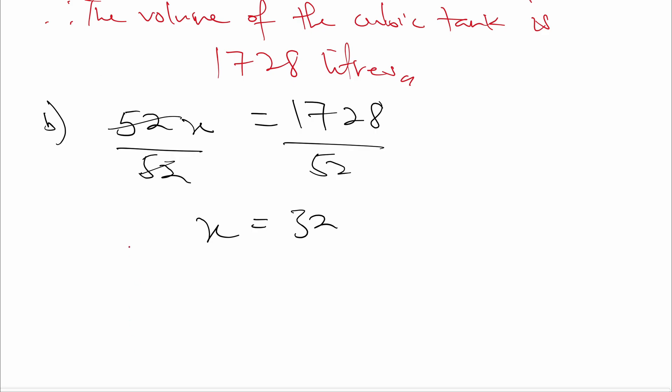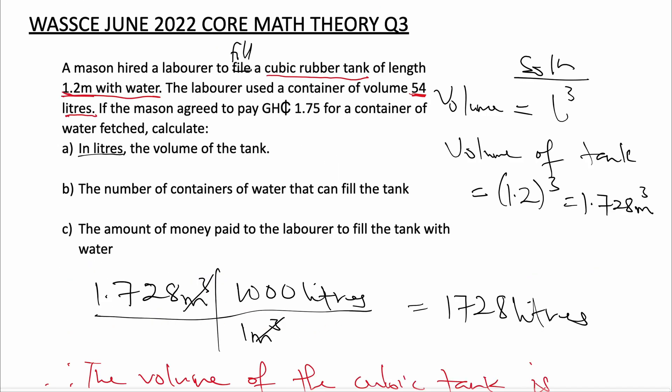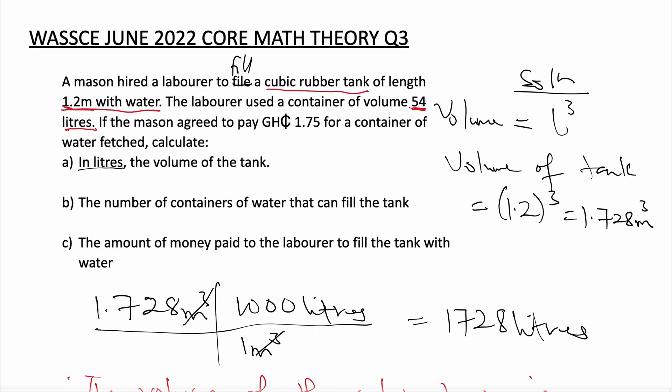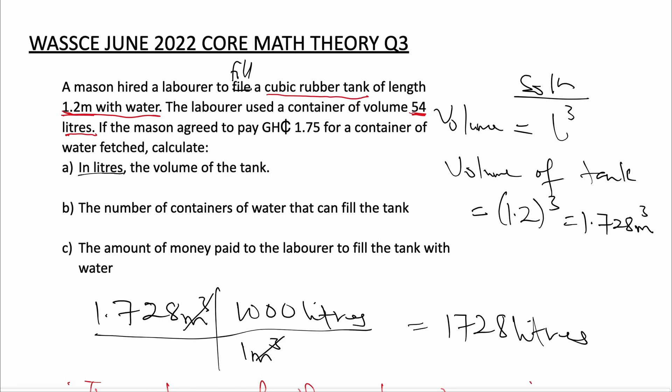Therefore, the number of containers that can fill the tank is 32. So we know that to fill the 1,728 liter rubber tank, we need 32 containers, each of volume 54 liters.